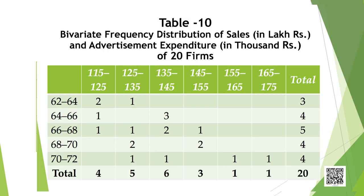Look at Table 10 shown on the screen. It shows the frequency distribution of two variables — sales and advertisement expenditure in rupees lakhs — of 20 companies. The values of sales are classed in different columns and the values of advertisement expenditures are classed in different rows. Each cell shows the frequency of the corresponding row and column values. For example, there are three firms whose sales are between rupees 135 and rupees 145 lakh and whose advertisement expenditure is between rupees 64 and rupees 66 thousand. The use of bivariate distribution will be taken up in the chapter on correlation.